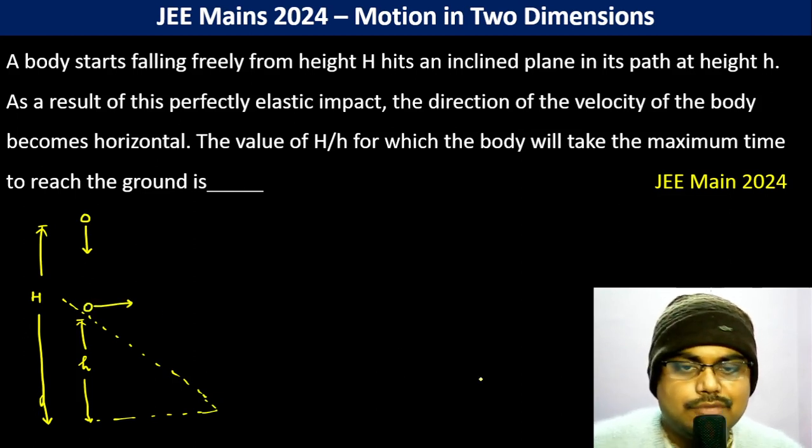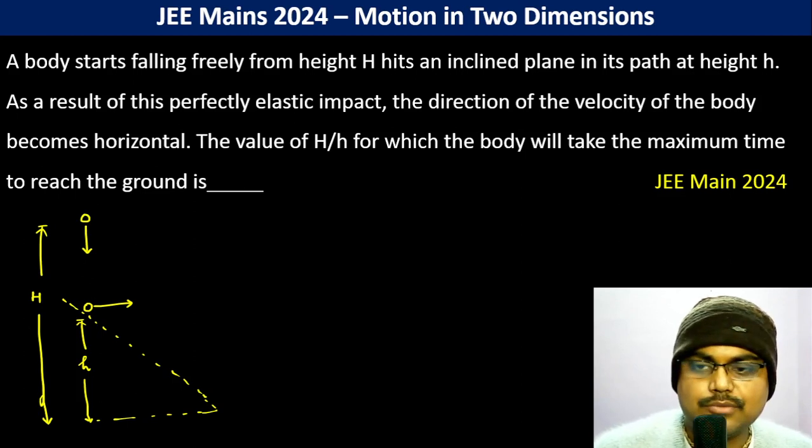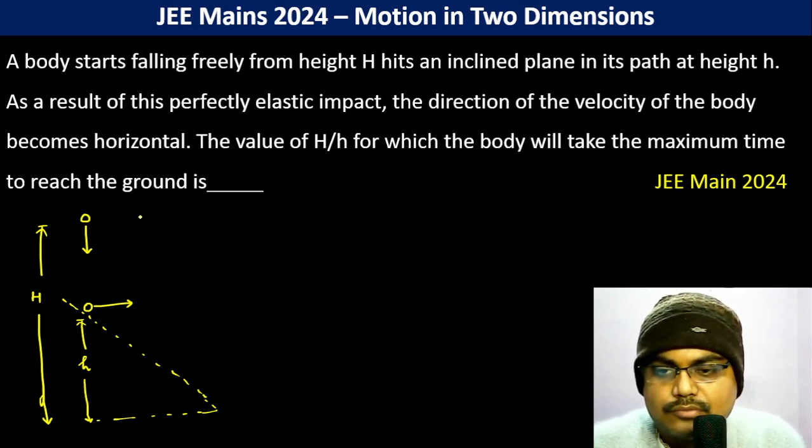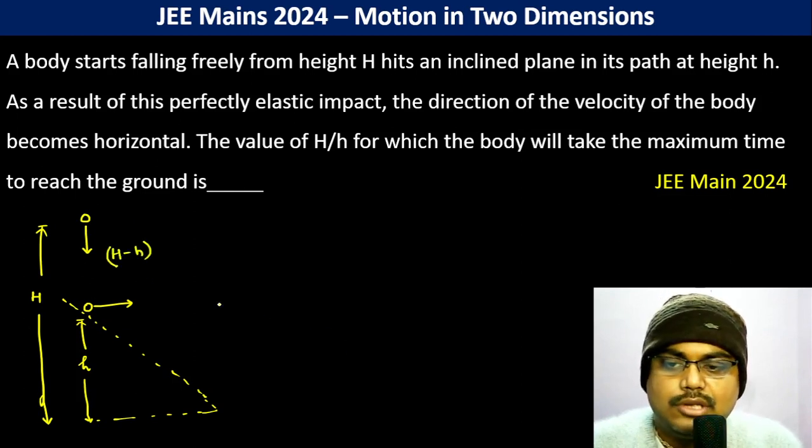The value of H by h for which the body will take the maximum time to reach the ground. So this is H, this becomes H minus h. So now how much time it takes? S equals UT plus half a T square.